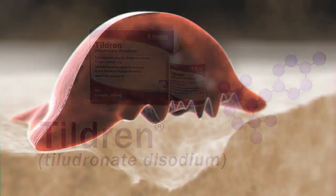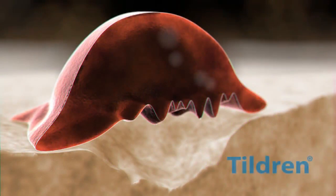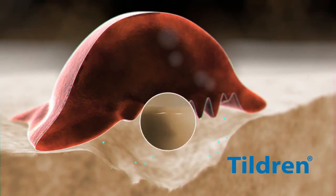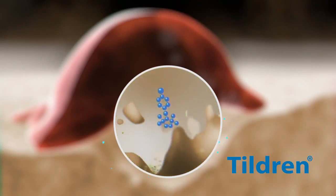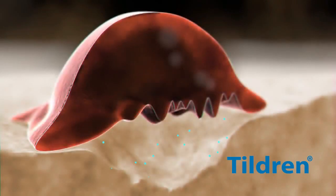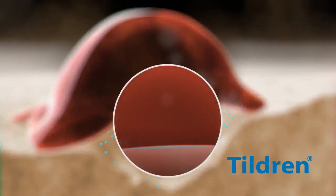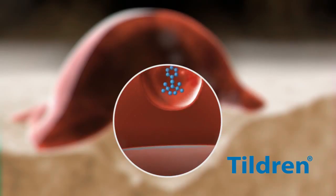Following IV infusion, Tildrin travels through the bloodstream and binds to the mineral matrix of the bone. The acidity of the remodeling environment causes the release of Tildrin from the bone matrix into the resorption space, where Tildrin penetrates the osteoclast by endocytosis.